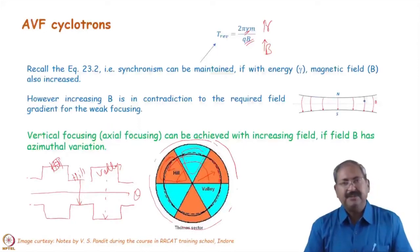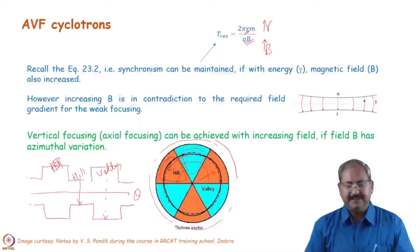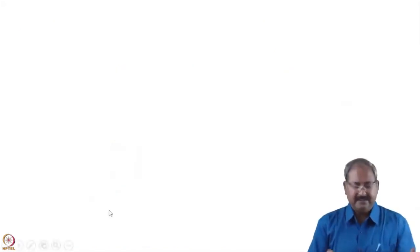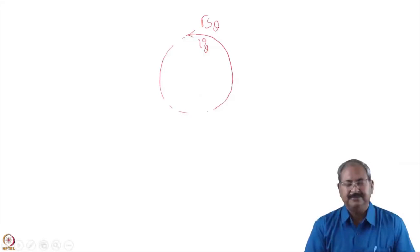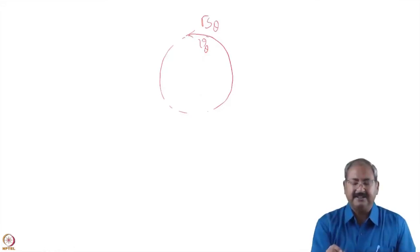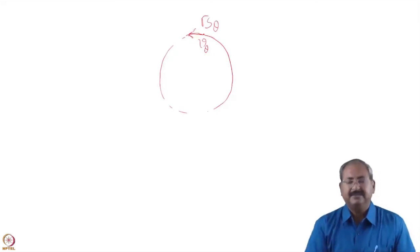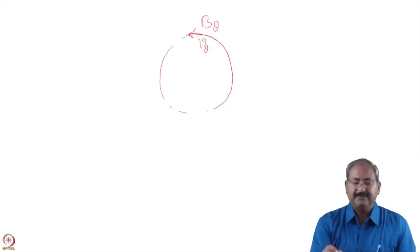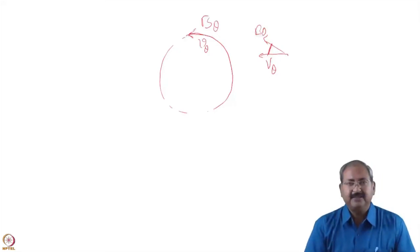Now, how the vertical focusing can be achieved using this? We see this. Now, in a perfect circle, if we have V theta here and if we generate a B theta, the force will be zero. However, in the vertical direction, this kind of configuration cannot give a vertical force or vertical focusing. If there is an angle between the B theta and V theta, if there is a certain angle, then a vertical component or force can be generated using V theta and B theta. So, this type of technique is used by introducing the valley and hills.